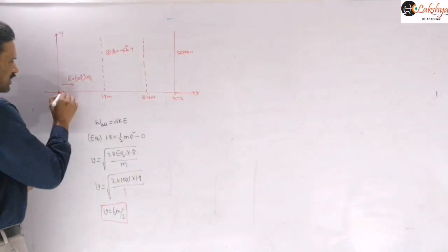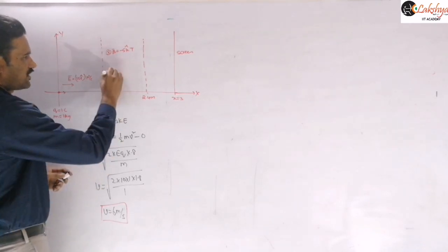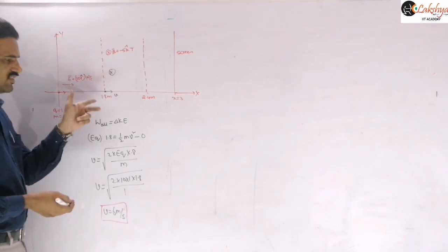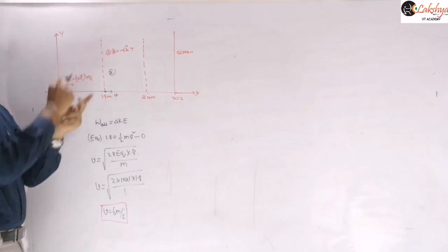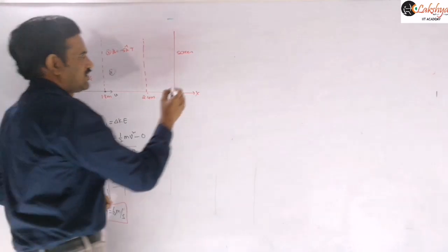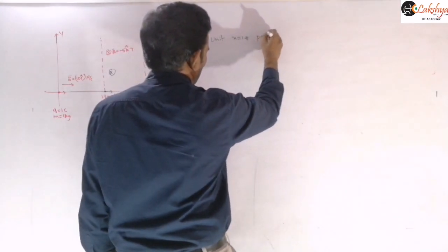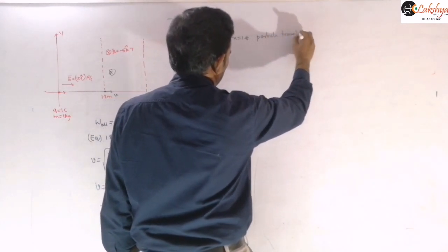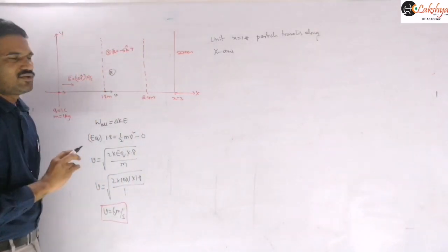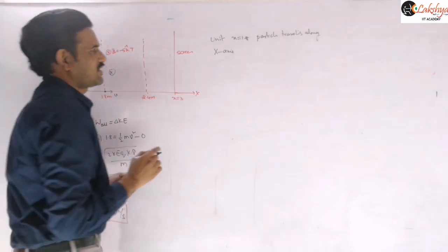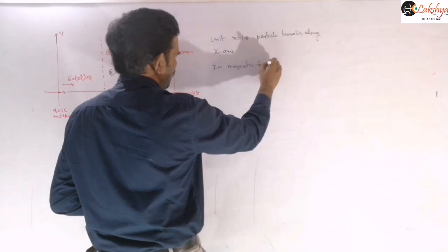Until x = 1.8 m, the particle follows the same straight path along the x-axis. At x = 1.8 m the velocity is 6 m/s. The magnetic field is into the plane (−k̂ direction). As the particle enters the magnetic field region it turns into a circular path. Let us find the radius of this circular motion.